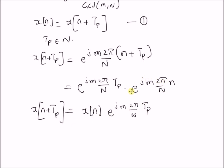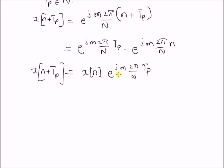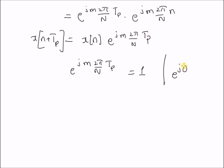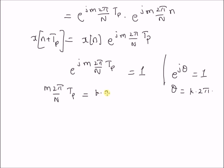This is true because that exponential equals x(n) based on the definition of the signal. Since x(n) is periodic from equation 1, we deduce that e^(j * m * 2π/N * Tp) must equal 1. Note that e^(jθ) = 1 means θ is a multiple of 2π, where k is an integer. Therefore, m * 2π/N * Tp must equal k * 2π.